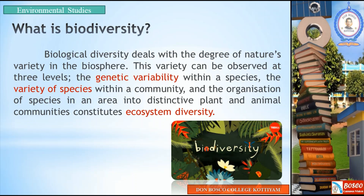This variety can be observed at three levels: the genetic variability within a species, the variety of species within a community, and the organization of species in an area into distinctive plant and animal communities, which constitutes ecosystem diversity.